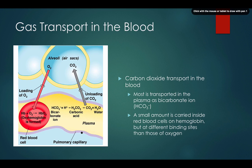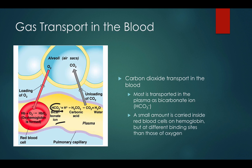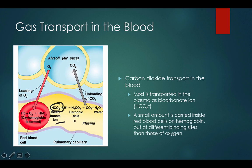Carbon dioxide is transported back to the alveoli mostly as bicarbonate, which is HCO3 negative. A small amount is also carried inside the red blood cells on hemoglobin, but at different binding sites than oxygen. For the most part, carbon dioxide is carried within the plasma as bicarbonate.